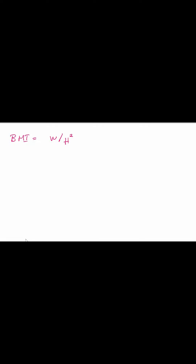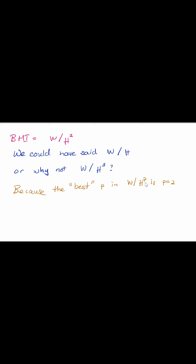We're looking at how to compare two different people that might have the same weight and adjust for their height. What we know is that in all cases, weight scales to height squared. So instead of dividing by height, I could have divided by height cubed, but somehow I have to adjust for weight depending on how tall I am. It turns out we can actually prove that this best power, P, is 2.